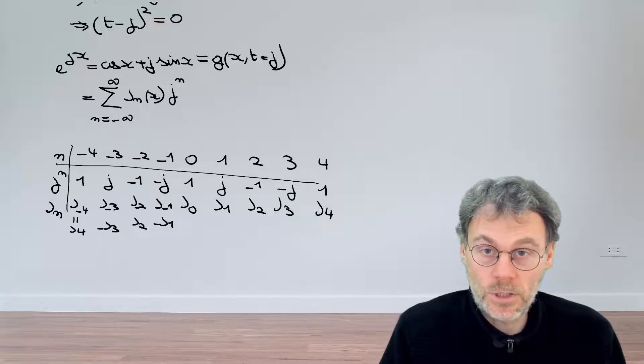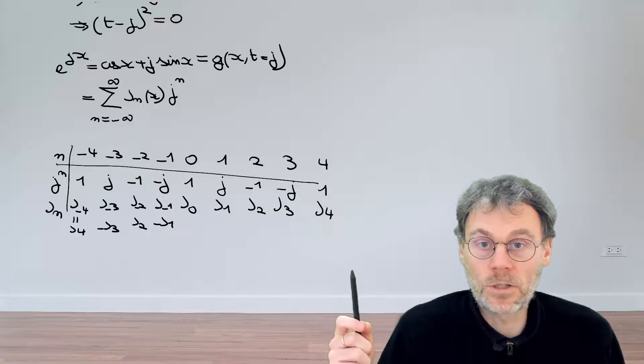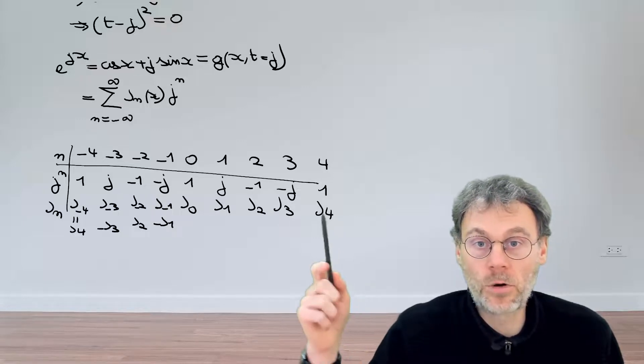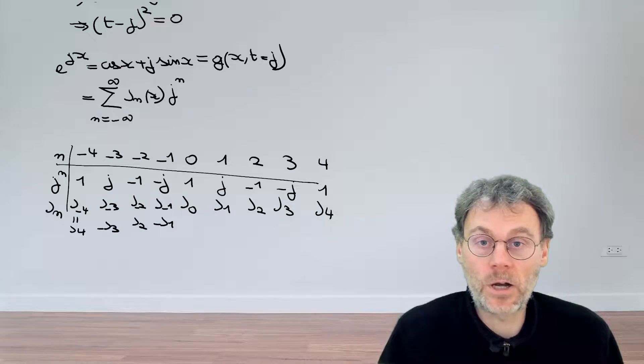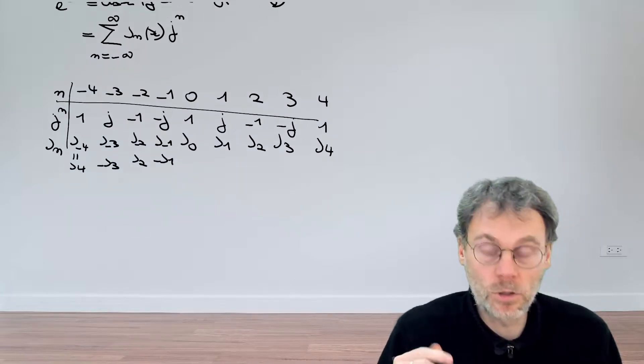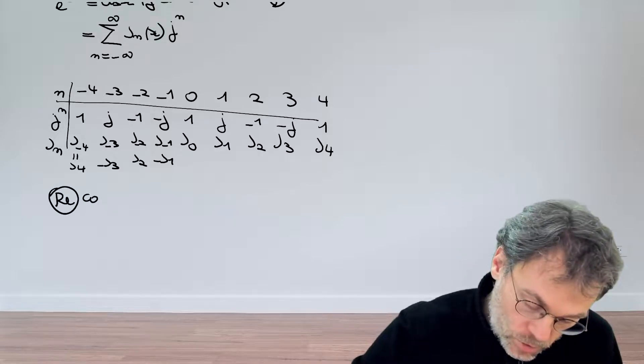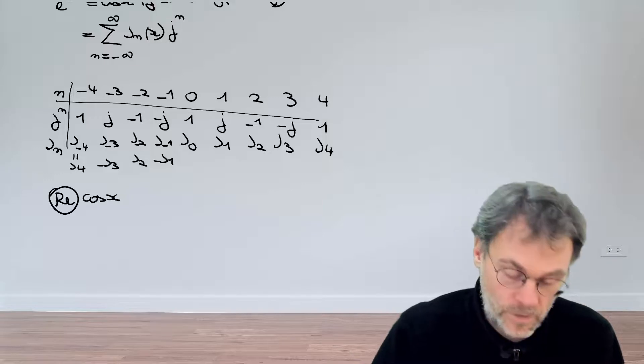So here we have all of these terms, and now we can really see what's going on, because we see that half of these terms are purely real, and the other half are purely imaginary. So let's have a look at the terms which are purely real first, and that will give us the contribution to cosine of x.